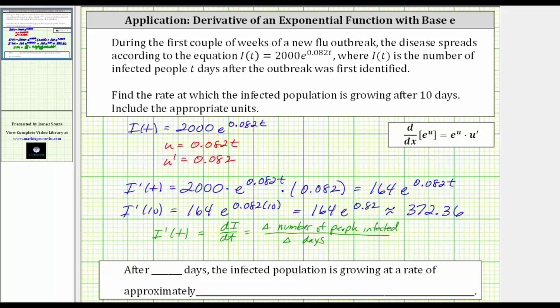So in our case, if we round to the nearest whole number, we have 372, which we can write as a fraction as 372/1, where the 372 represents the change in people, and the one represents the change in days. And therefore, the units would be 372 people per one day. Let's write this as a complete sentence. After 10 days, the infected population is growing at a rate of approximately 372 people per one day, or just per day.